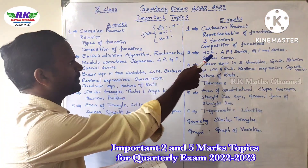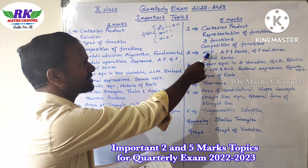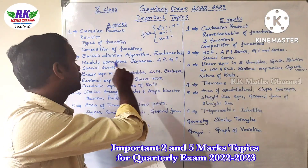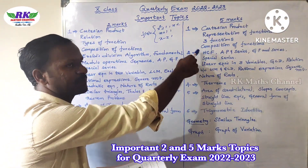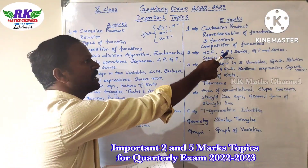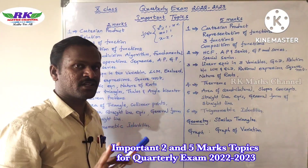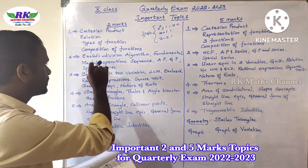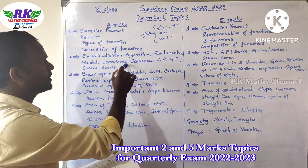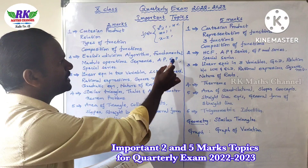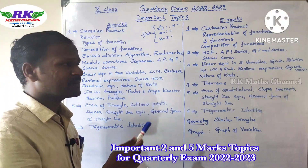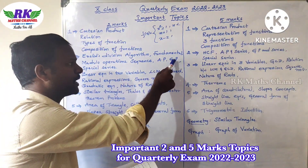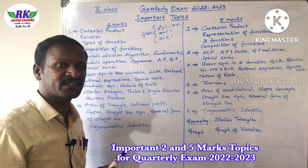If we start with the 5 marks: first, HCF — Euclid division algorithm used to find HCF. So we start with the 5 marks. This sequence includes AP and GP — arithmetic progression and geometric progression. This is also 2 marks.